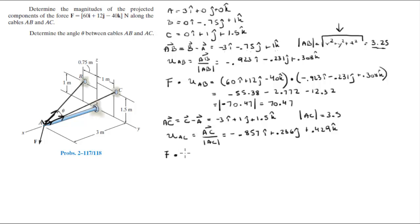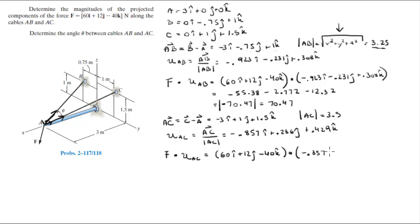Now that we have the unit vector AC, we calculate the projection of F along AC using the dot product. F is 60i + 12j − 40k, dotted with −0.857i + 0.286j + 0.429k. This comes out to be −65.148.